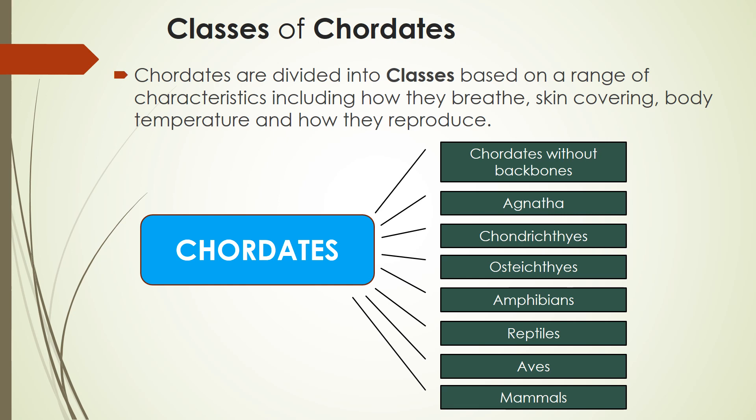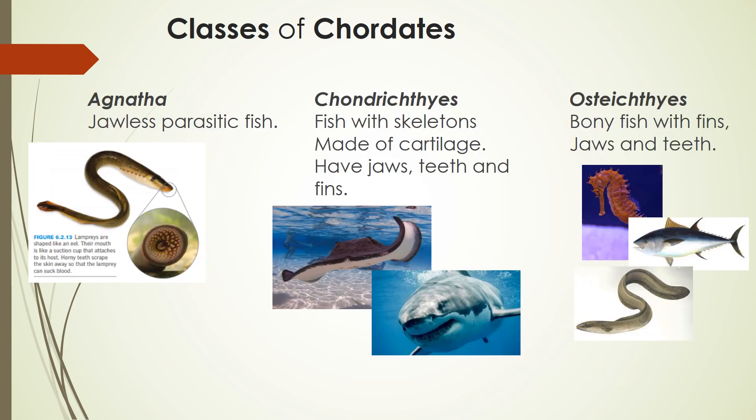Chordates are further divided into eight classes based on characteristics including how they breathe, the type of skin, body temperature, and how they reproduce. First up, we have Agnatha — Greek for 'no jaw' — so these are jawless, parasitic fish. In the middle, we have Chondrichthyes: fish with skeletons made of cartilage, and they also have jaws, teeth, and fins. Examples include stingrays and sharks. On the right, we have Osteichthyes — fish that have bones as well as fins, jaws, and teeth. Examples include seahorses as well as a typical fish you would catch in a lake.